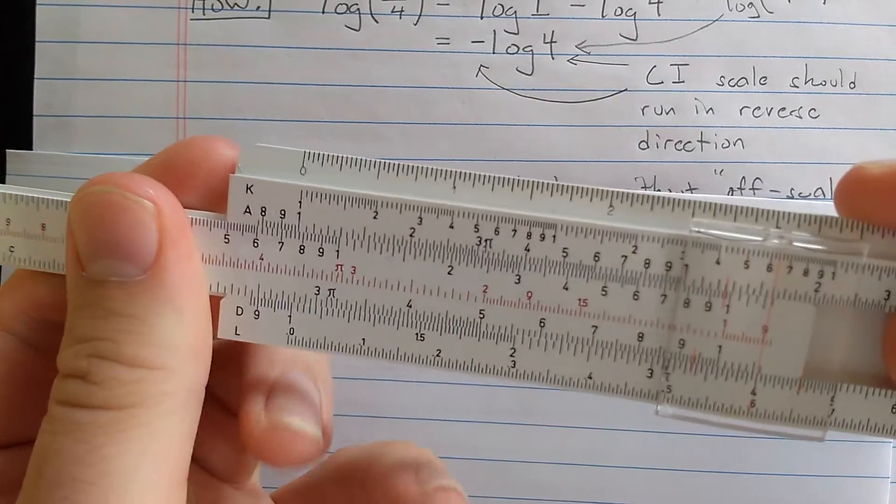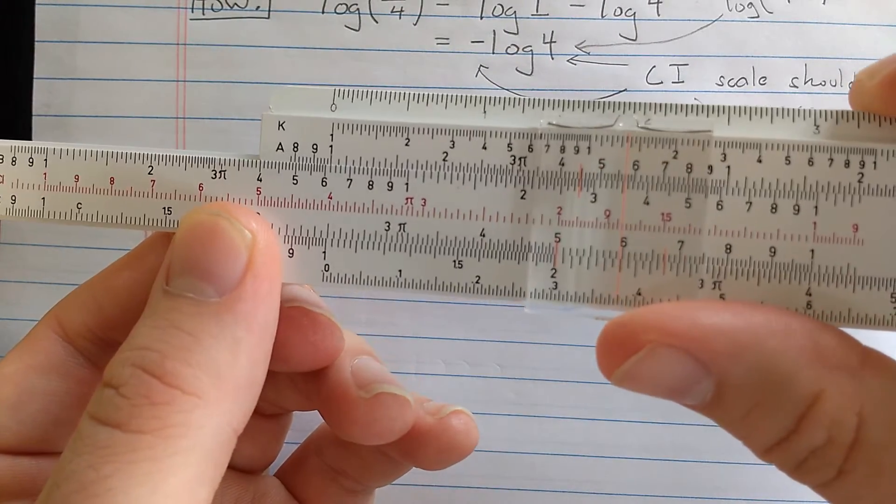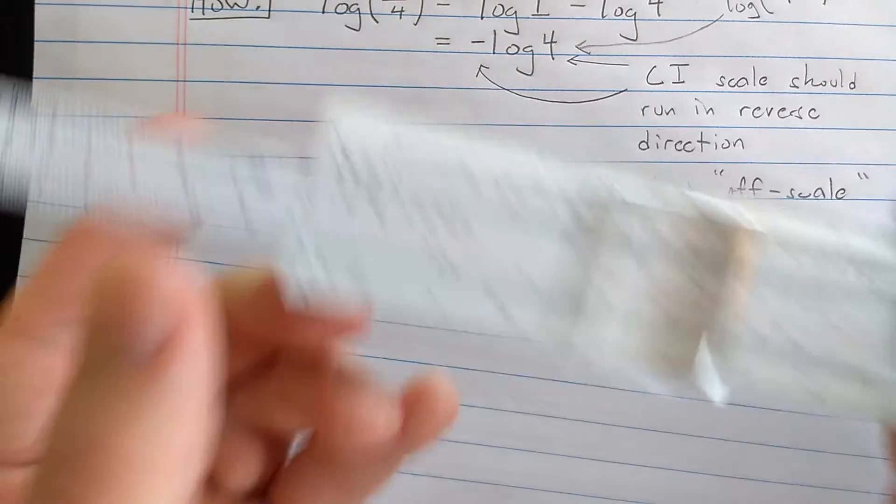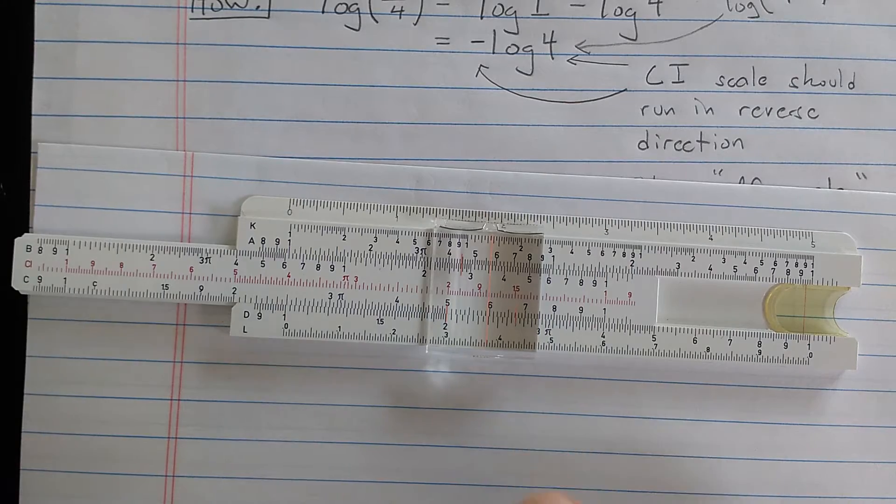And I fixed that by reversing it and using the other index because the indices should be the same. That's hard to slide here. And then finding the 6 here and reading the result 2.4 or 24.